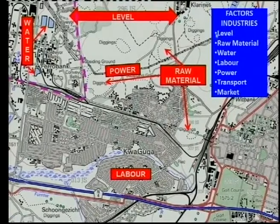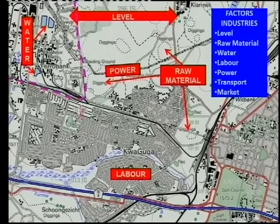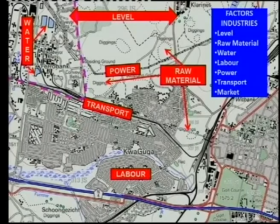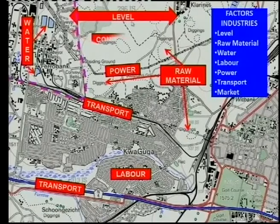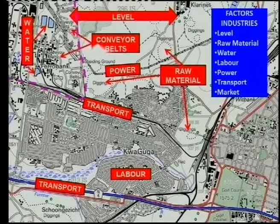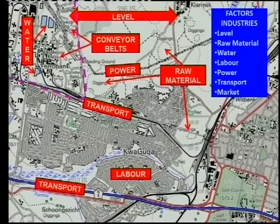Here we've got a power line running down here to supply electricity to FerroBank. Then we've got our transport — here's a railway line running here for transport. Also, we've got roads running in and around FerroBank. We've also got conveyor belts here — two conveyor belts here in FerroBank industrial area.